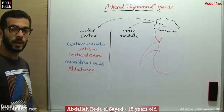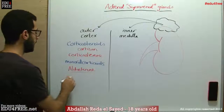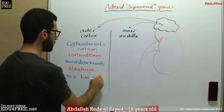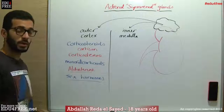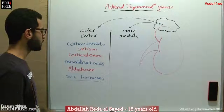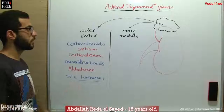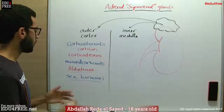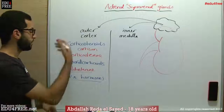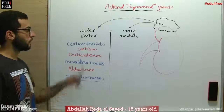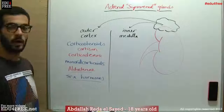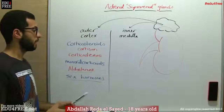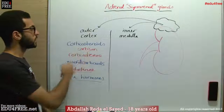The last type of hormones produced by the outer cortex of the adrenal gland is the sex hormones. Originally, sex hormones are produced by testes in males and ovaries in females, but they are also produced from the adrenal cortex. Abnormalities in the production of sex hormones from the outer cortex could lead to masculinization in females, or feminization in males, and atrophy in gonads.